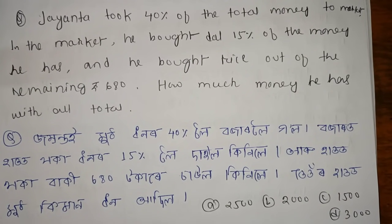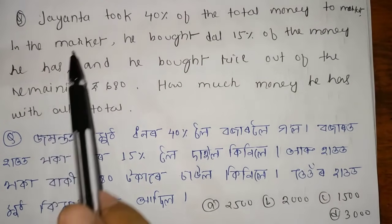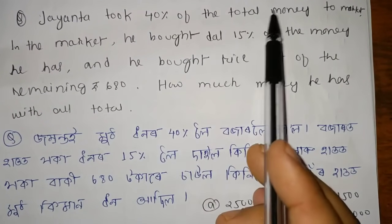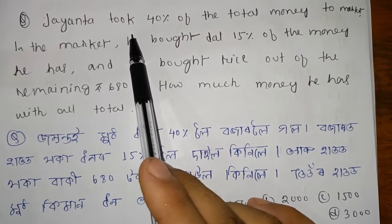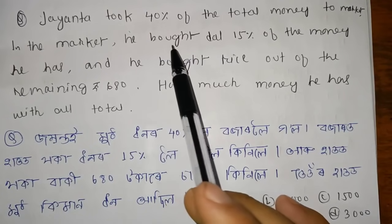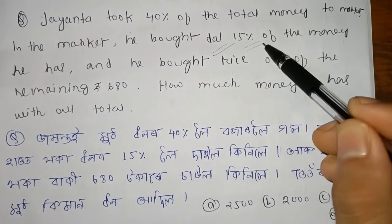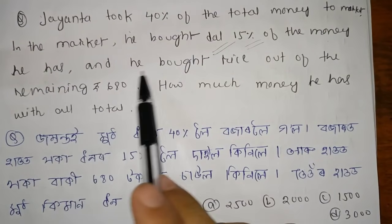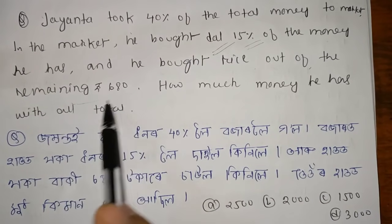Our next question is a very important question. The first one is a tough level. We have to apply the question, which is important. We have to apply the concept to the exam. Joyant took 40% of the total money to market. He bought rice out of the remaining 680.